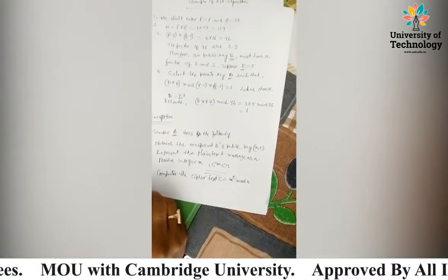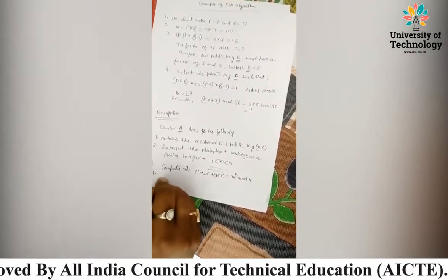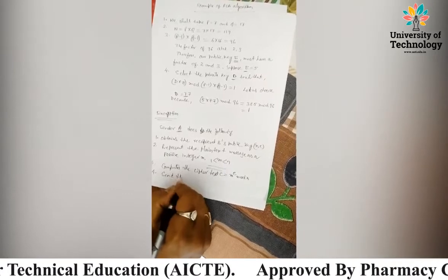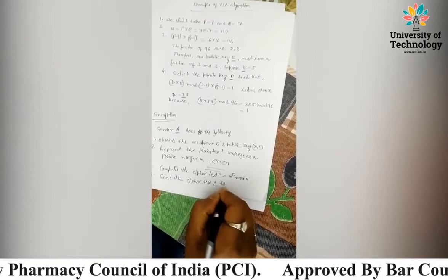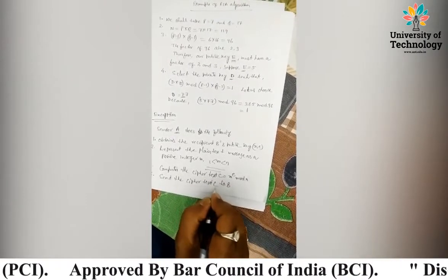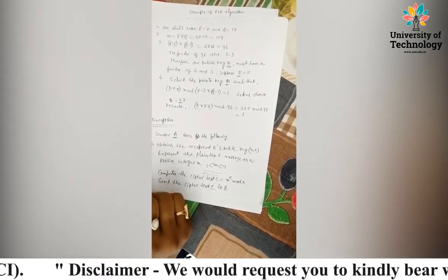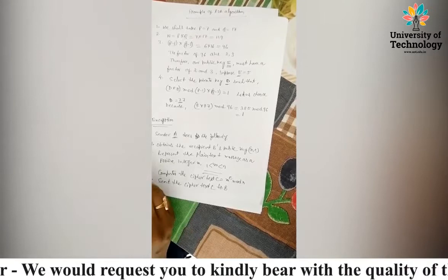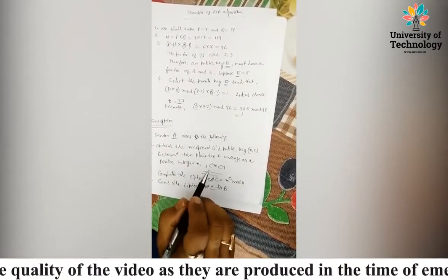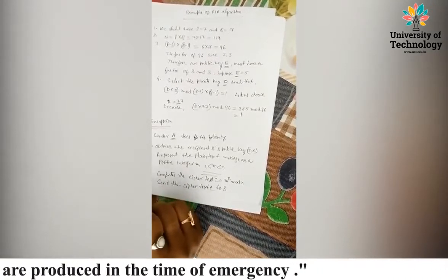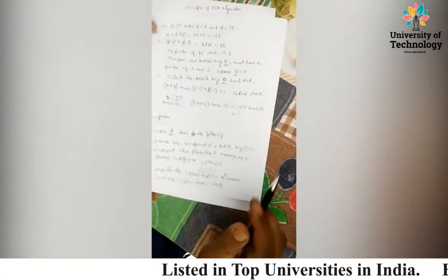That is the third step of RSA encryption. The final fourth step is: send the cipher text C to B. Whatever the value of cipher text C is, send it to B. These four steps are available for the RSA encryption process whenever A performs these following steps.